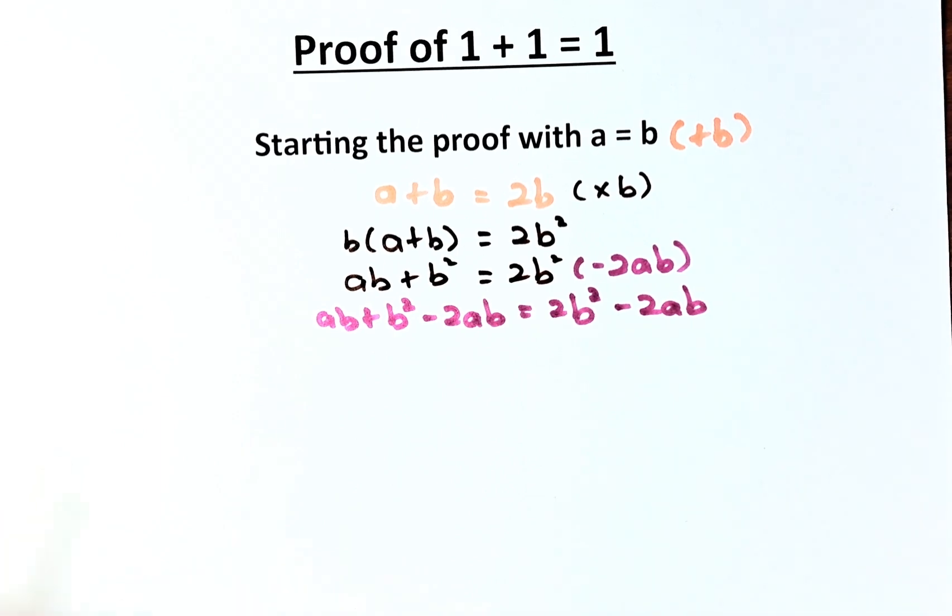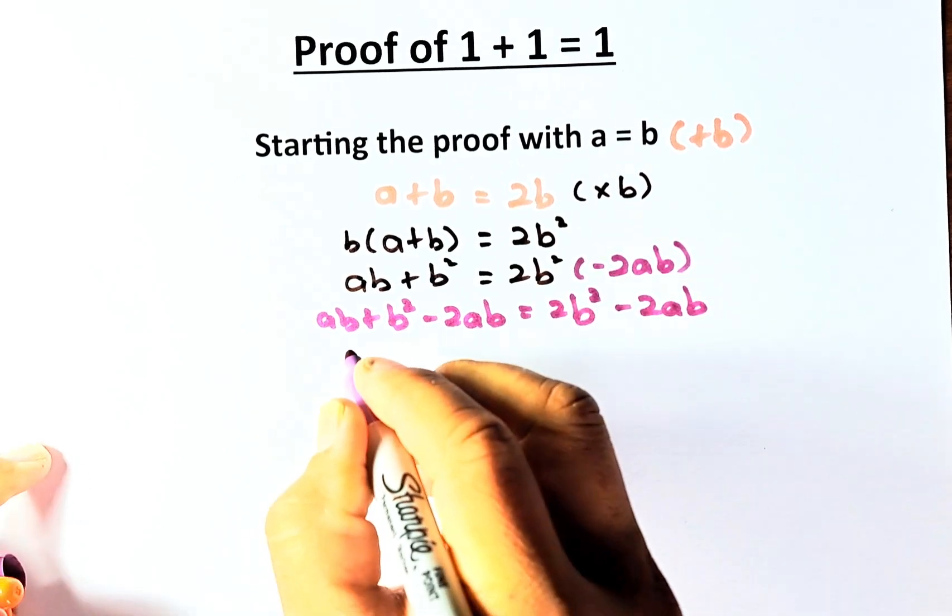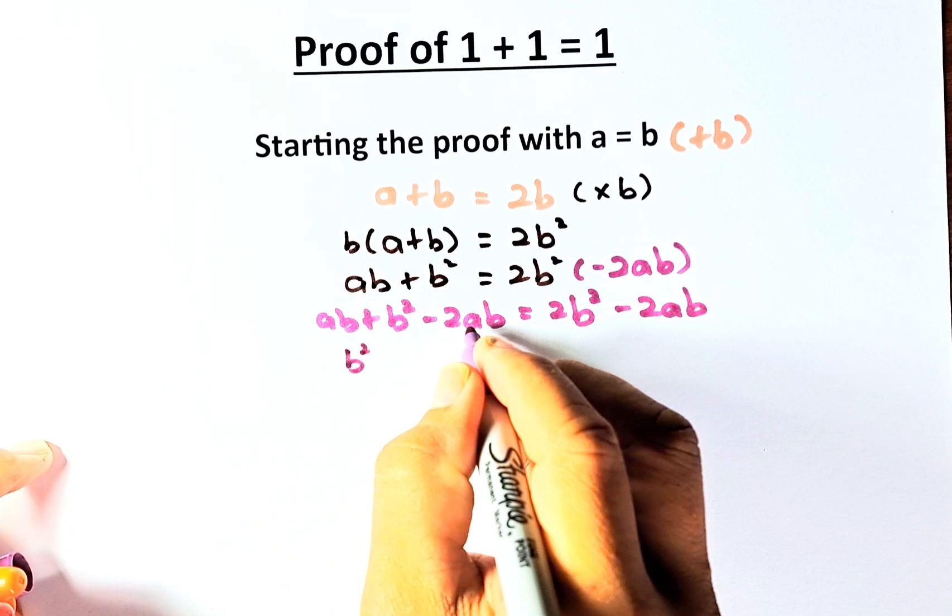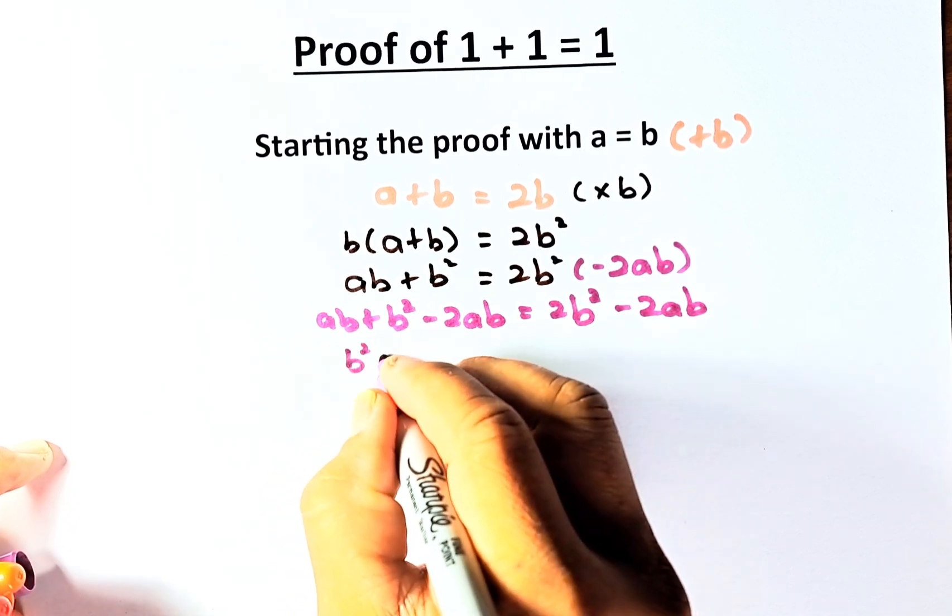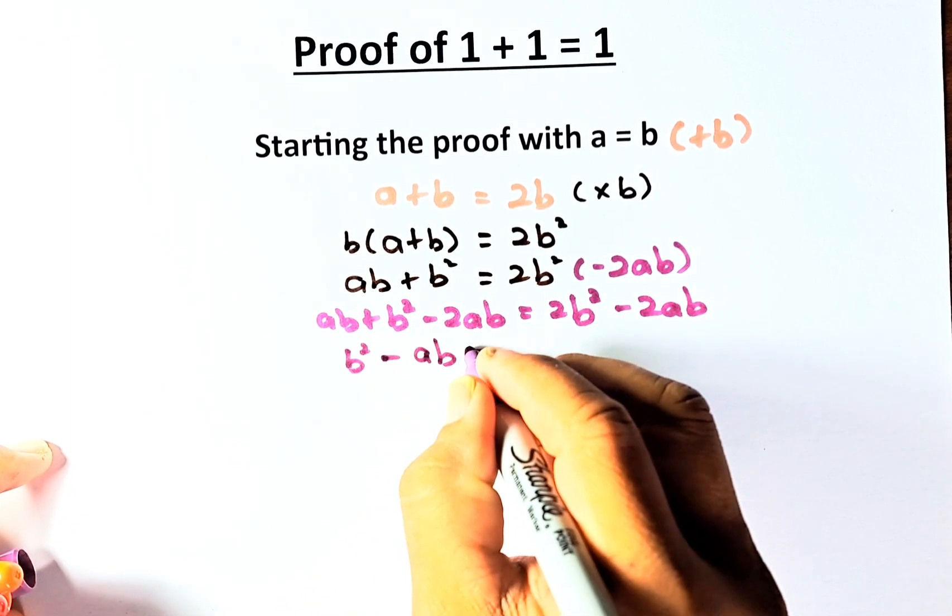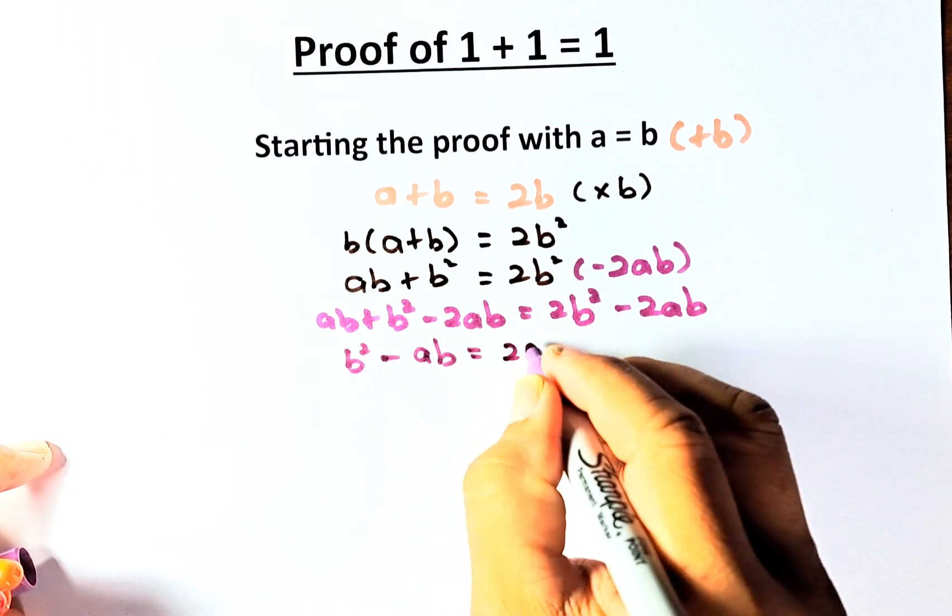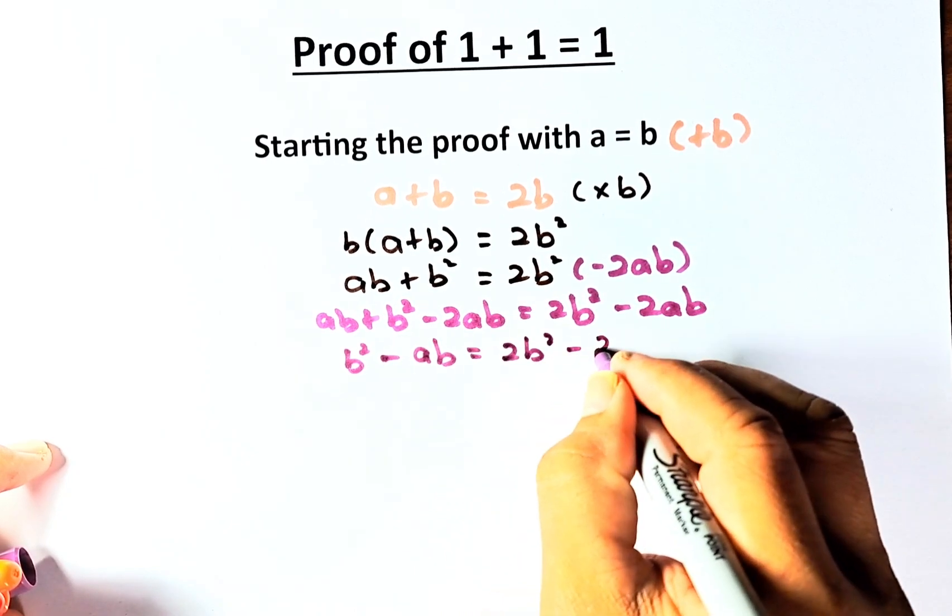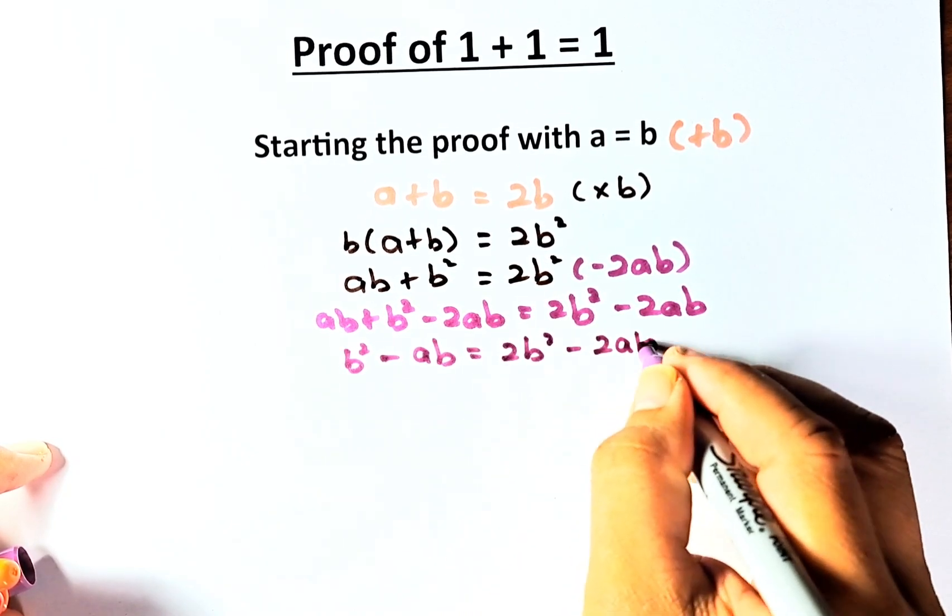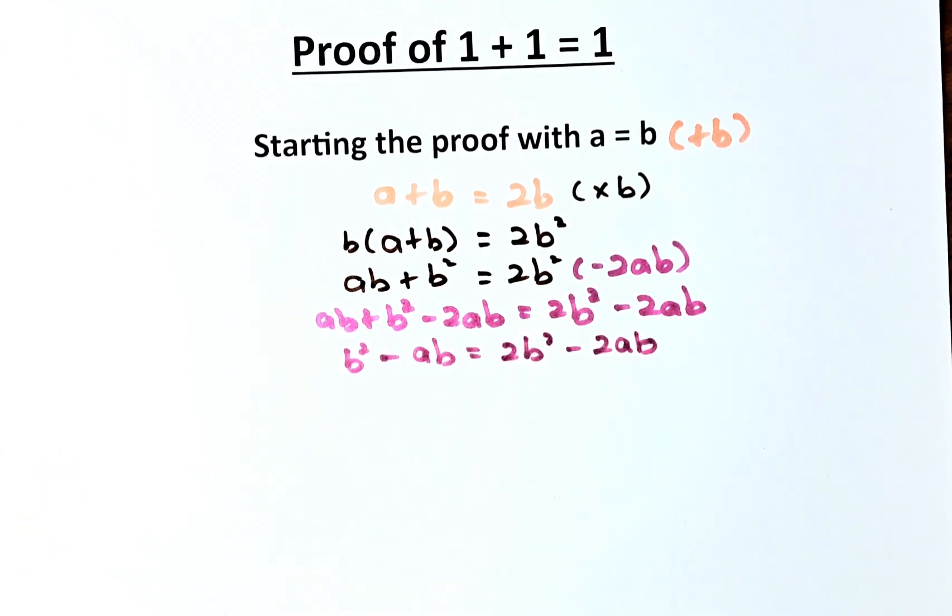Now what we're going to do is we are going to simplify that equation. That equation now is going to be b squared minus ab equals to 2b squared minus 2ab. So we have not done anything spectacular so far.